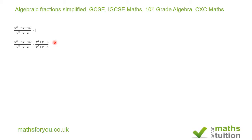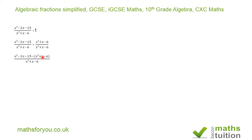Now if I replace my minus 1 by a fraction formed by the denominator x squared plus x minus 6 — if I divide x squared plus x minus 6 divided by x squared plus x minus 6, I get 1. So I've made no difference at all when you compare this with the original question. I'm going to combine these two terms using a common denominator of x squared plus x minus 6. Now notice there is a minus sign there, which means I have to put x squared plus x minus 6 in brackets, because when I open up the brackets that's going to affect the signs.